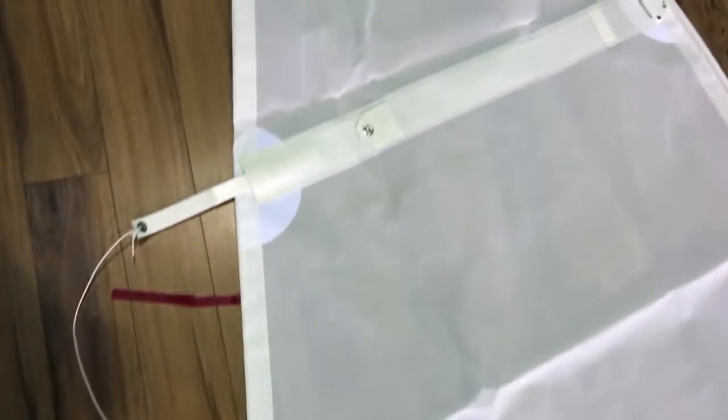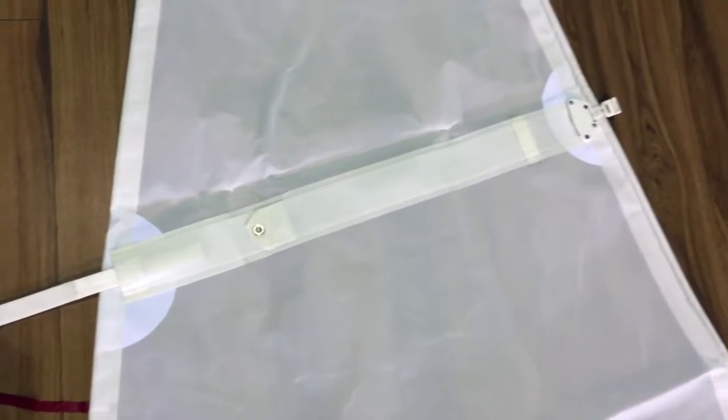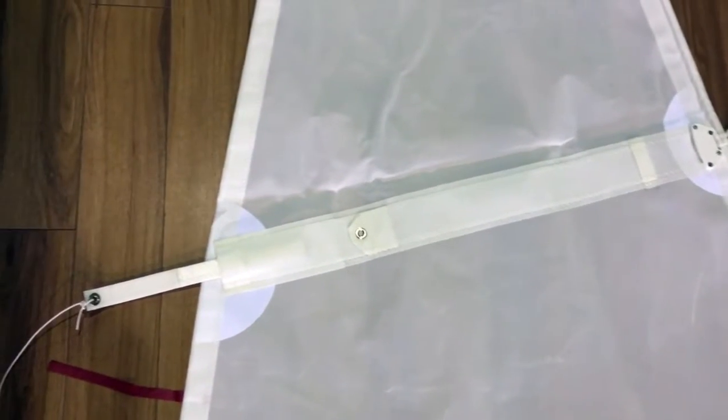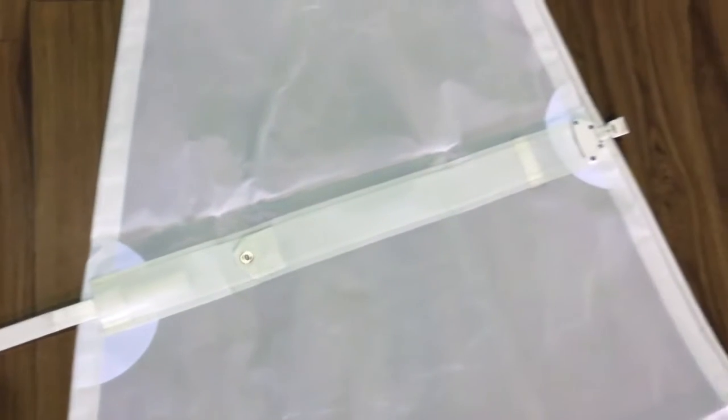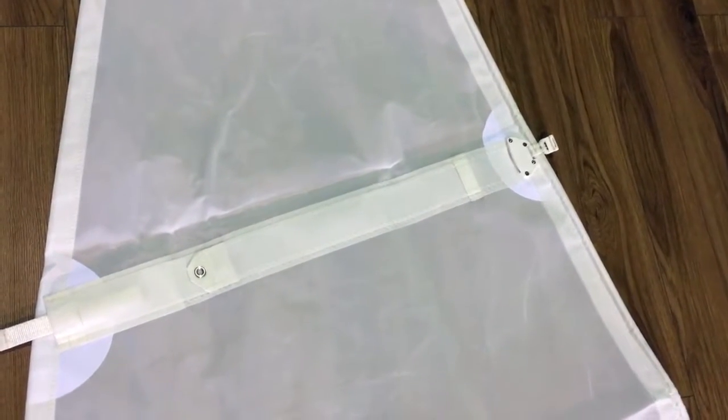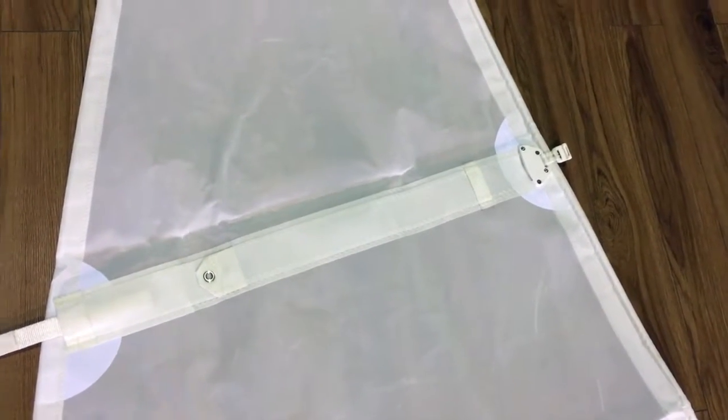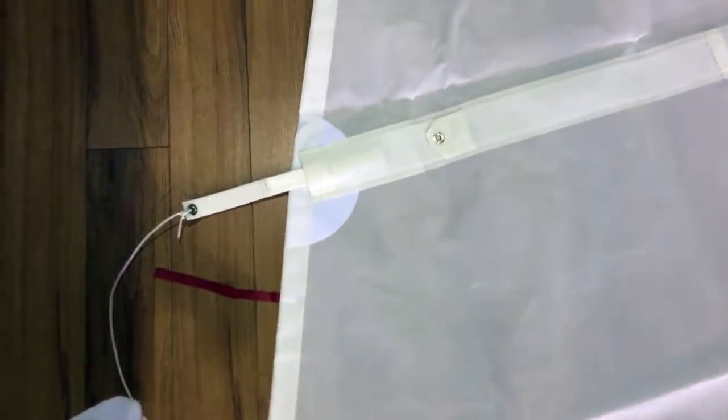Up here in the highest batten, this is actually a full batten, so it goes all the way through to the other side at the mast, and there's a batten receptacle there to hold it, so you can put some really good tension on this one as well.